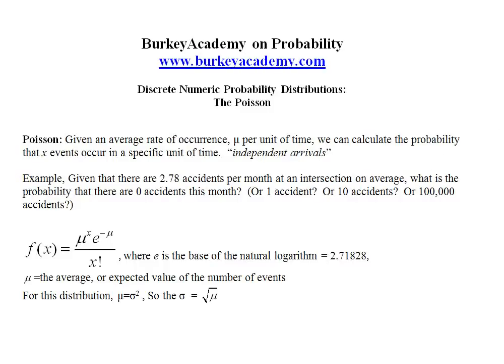In this video we're going to look at the Poisson probability distribution, which is one of these discrete numeric probability distributions where there's a random process and the outcome is going to be counting up something.